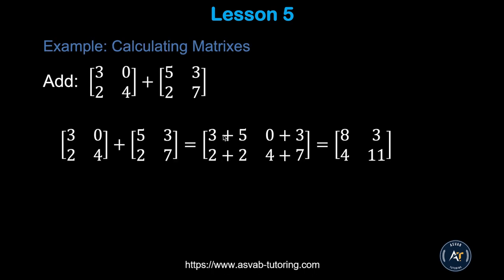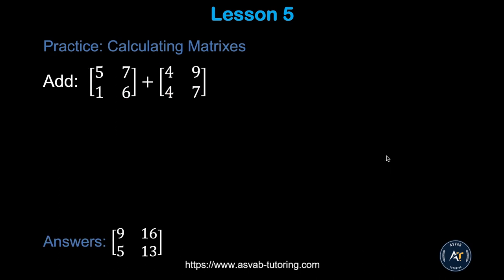Now we'll learn how to do matrices. Here are two matrices that you can add together: add corresponding elements — 3 with 5, 0 with 3, 2 with 2, 4 with 7. That gives you: 3 + 5 = 8, 0 + 3 = 3, 2 + 2 = 4, 7 + 4 = 11. This type of question has been appearing in the test recently, so make sure you practice. There is another practice problem — try by yourself and make sure you get the correct answer.